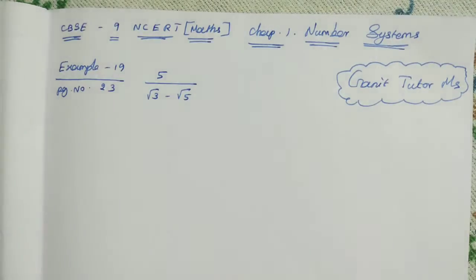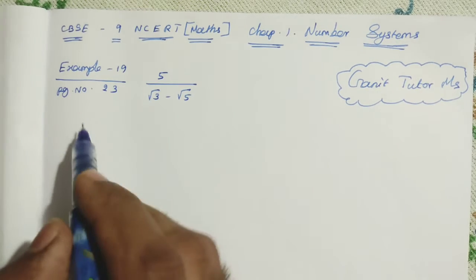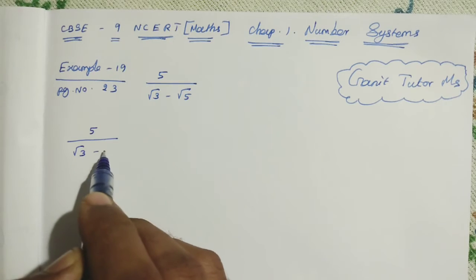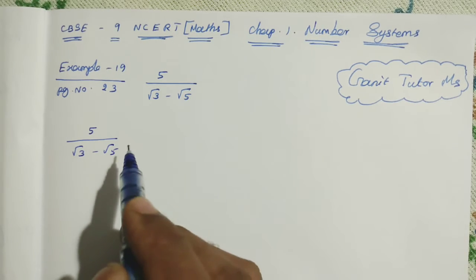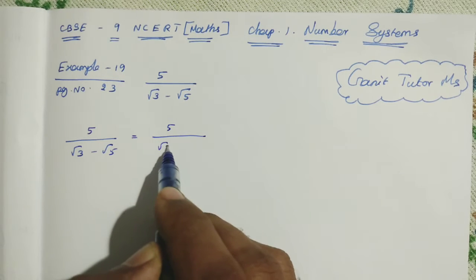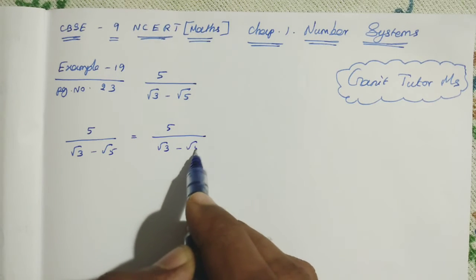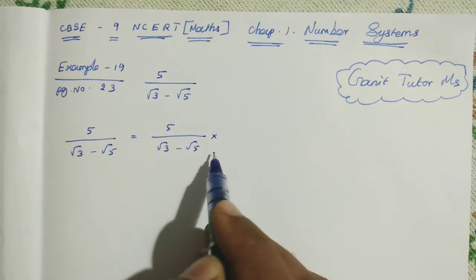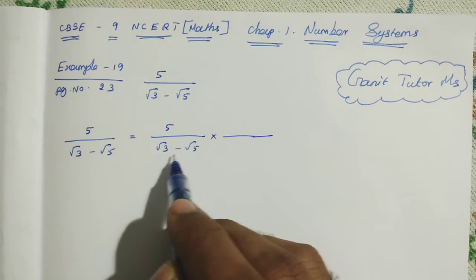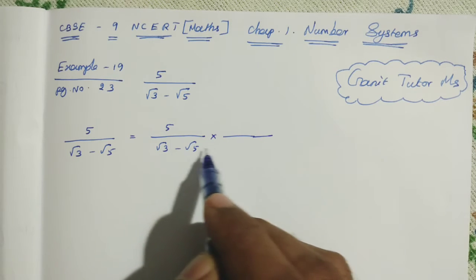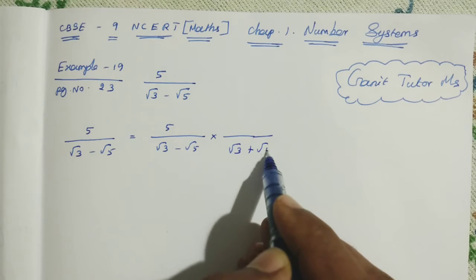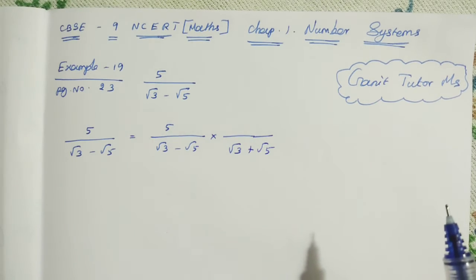So in this problem, first we write 5 divided by root 3 minus root 5. We should multiply some number to make the denominator rational. What we should do? We should multiply by the denominator's conjugate. The conjugate is root 3 plus root 5.